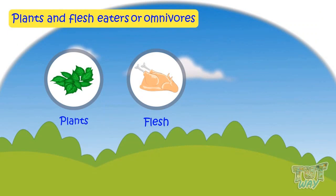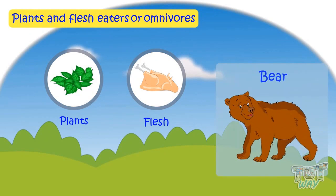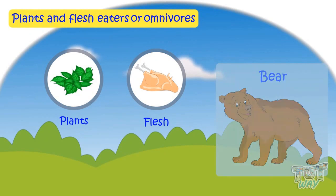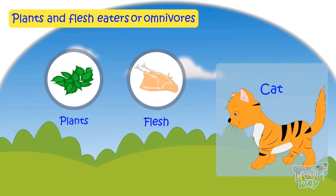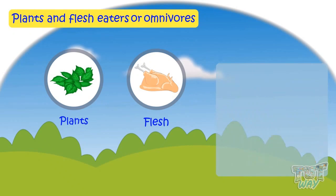Some animals eat both plants and flesh. These animals are called plant and flesh eaters, or omnivores. They eat both types of food items — plants as well as flesh of other animals. Examples of omnivores are bears, rats, cats, and crows.